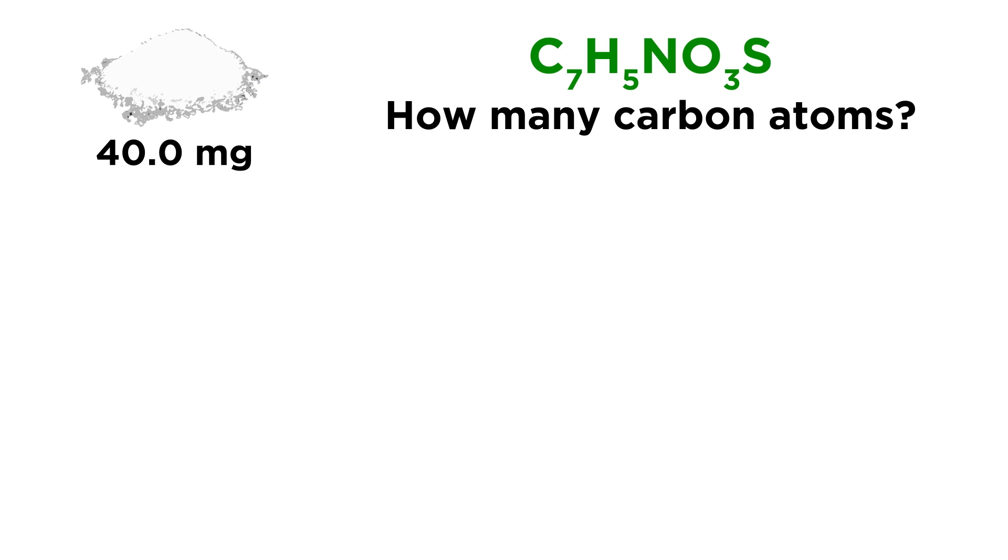Now moving on to the second question. We have our 40.0 milligrams of saccharin, and there is the molecular formula. And we want to know how many carbon atoms are in there. So this is very similar to the first question. Let's approach it the same way. We have 40 milligrams. And once again, we want that in grams because all of our molar masses that are going to enable us to convert into moles use grams. So let's multiply by one gram over 1000 milligrams. We need milligrams on the bottom so that milligrams will cancel and we are left with a value in grams.